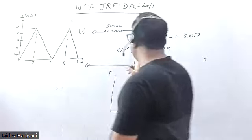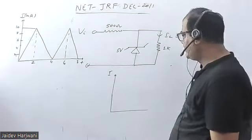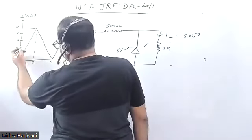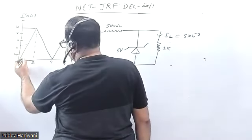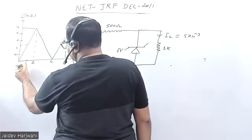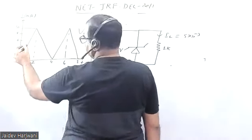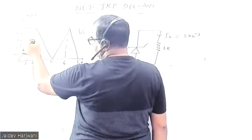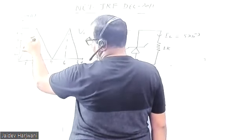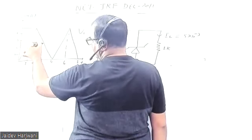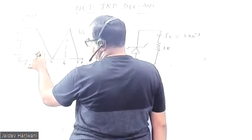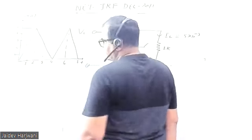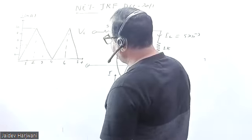Once the diode conducts, this current will be fixed. Before the current reaches 5 milliamperes, the diode will be non-conducting — it will be open — so no current will be flowing. The 5 milliampere threshold is reached at 1 second, and then the current is above 5 milliamperes from 1 to 3 seconds, meaning current will be flowing through this Zener diode from 1 to 3 seconds.